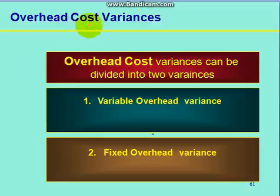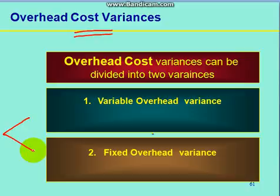Now, what are the overhead cost variances? Overhead cost variances can be of two types: variable overhead and fixed overhead.